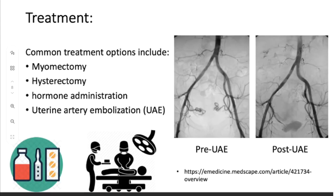What are the possible treatments? Generally, doctors prefer not to intervene with benign masses unless they are located in a critical area or are causing problems. In that case, options include myomectomy, which is removal of the whole mass, or hysterectomy, which is removal of the whole uterus.